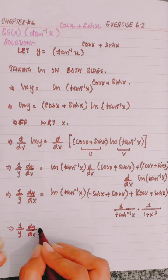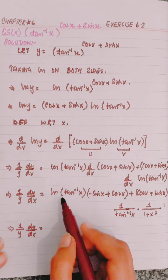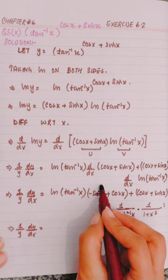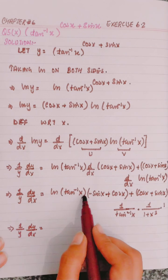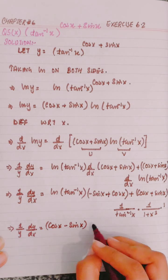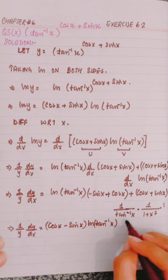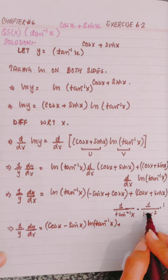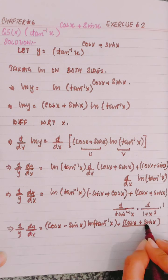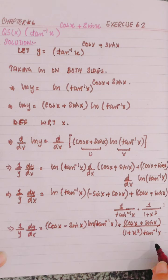1 over y dy by dx is equal to... We arrange it: whenever we have ln of any term, we bracket it to avoid confusion about what the ln applies to. So we write cos x minus sin x, and arrange it as cos x plus sin x divided by 1 plus x squared into tangent inverse x.